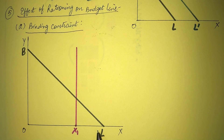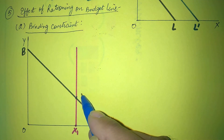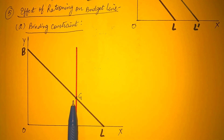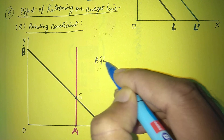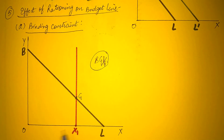The consumer is bound — they cannot consume more X than X1. Even though income allows buying up to OL, under government rationing the consumer can only take up to X1. X1 to L is not accessible. So the budget line runs from B to G to X1. The new budget line after rationing under the binding constraint is B, G, X1.